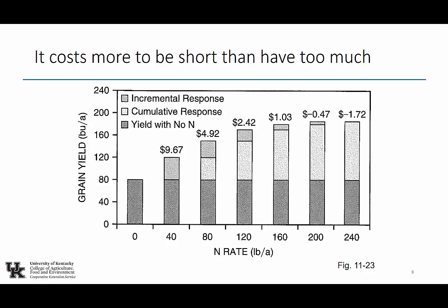The invisible hand of the market has pushed farmers to adjust to this risk. How many farmers do quadratic equations and derivatives and figure out the exact economic optimum rate? They don't even know why, but they're doing exactly what economists would predict. That's the invisible hand of the market — it always boggles my mind.